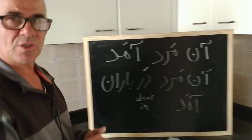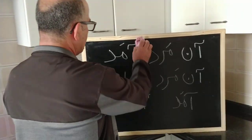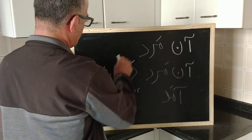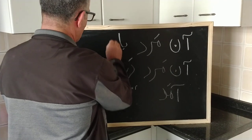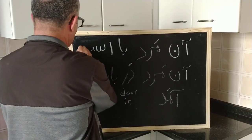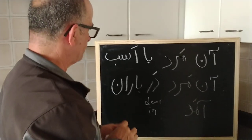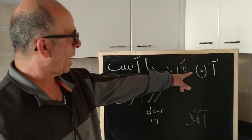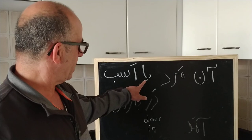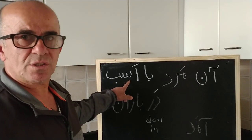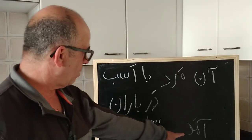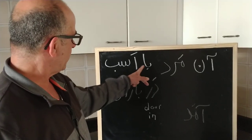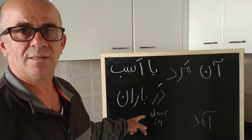Another word that children study: 'On mard ba asb dar baran amad' — 'That man came with a horse in the rain.' Bar means 'with,' Asb means 'horse.'